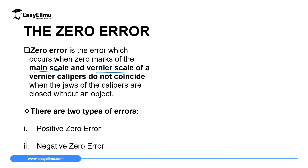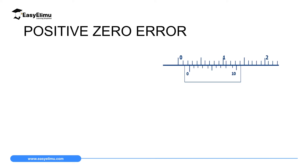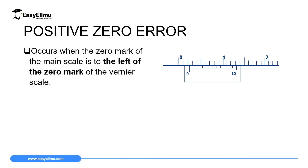The first error is the positive zero error. The positive zero error occurs when the zero mark of the main scale is to the left side of the zero mark of the Vernier scale. The diagram on the screen is a perfect example of a positive zero error — where the zero mark of the main scale is to the left of the zero mark of the Vernier scale. This instrument is already making some readings even when there is no object between the jaws.